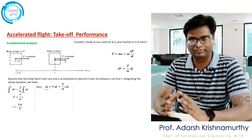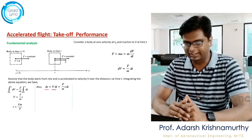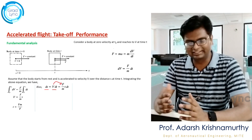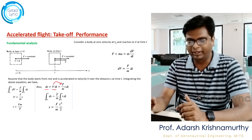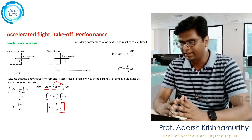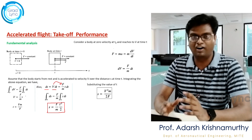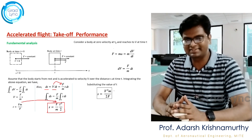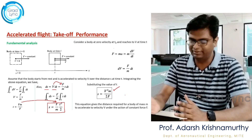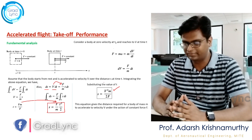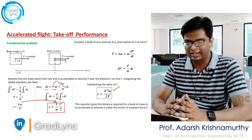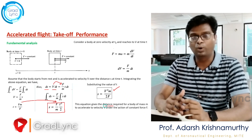Substituting the value of v and integrating for displacement s, we get s = (F/m)·(t²/2). Substituting the value of t from the previous equation, we finally get the distance traveled as s = v²·m / (2F), where v is the final velocity, m is the mass of the object, and F is the applied force. This equation gives the distance required for a body of mass m to accelerate to velocity v when force F is applied.